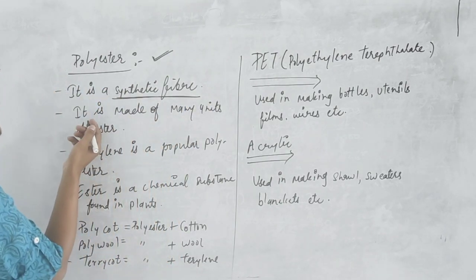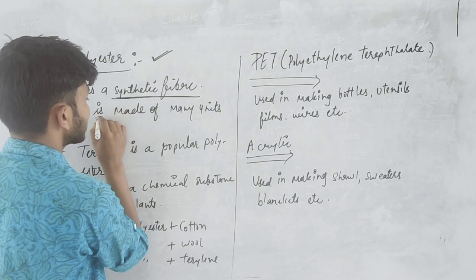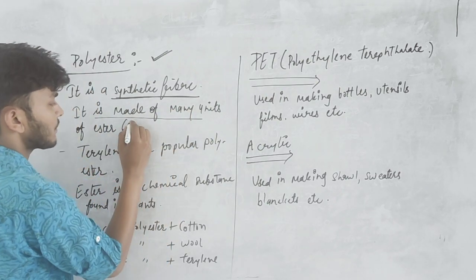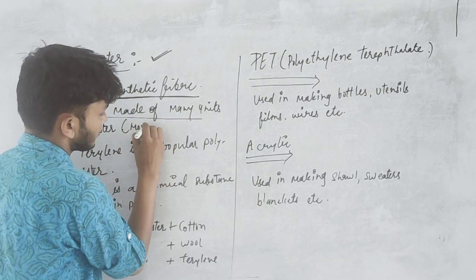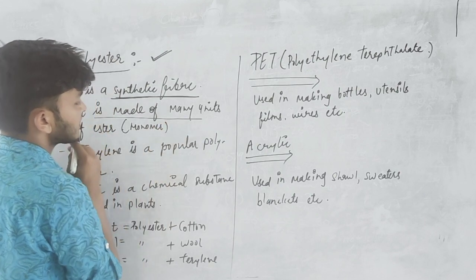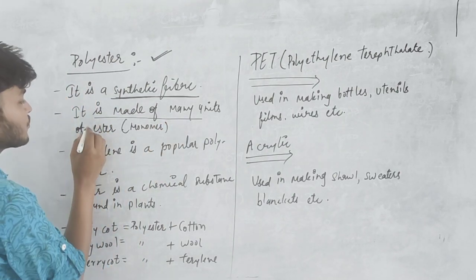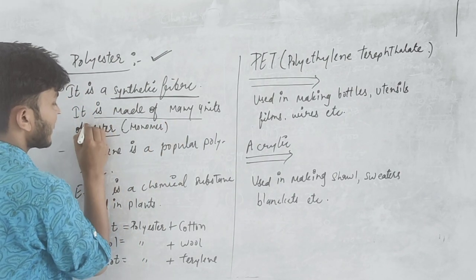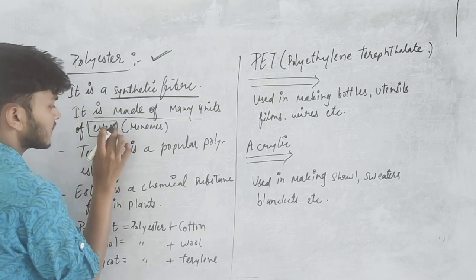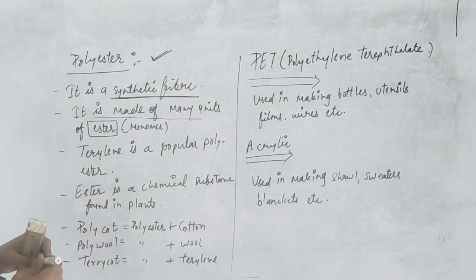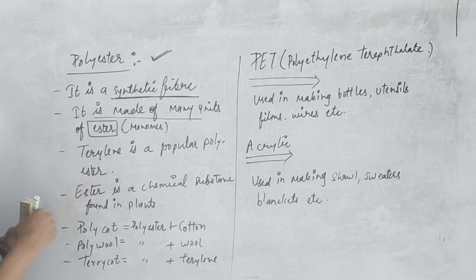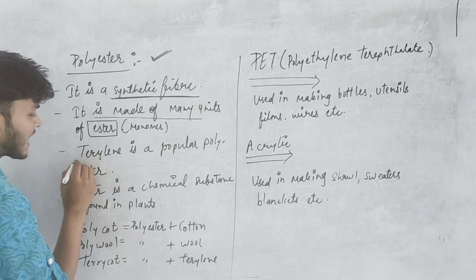It is made of varieties of monomers, thousands of monomers. What are the monomers? Aster. Aster monomers make polyester. There is a famous polyester that is terrylene.